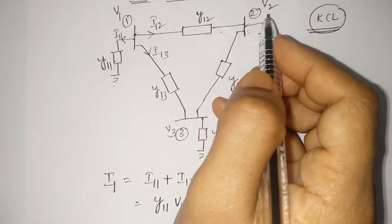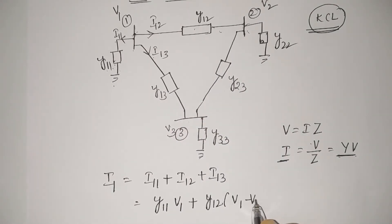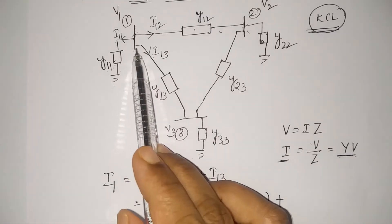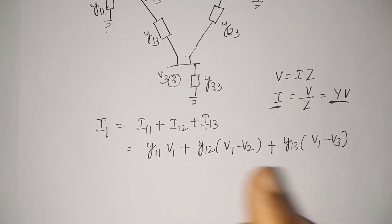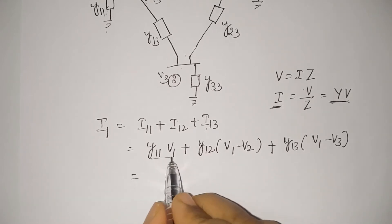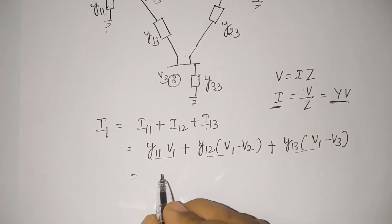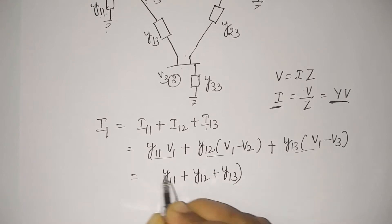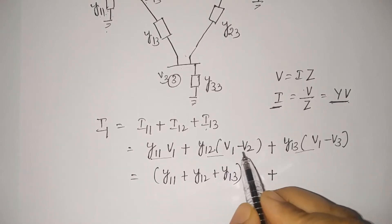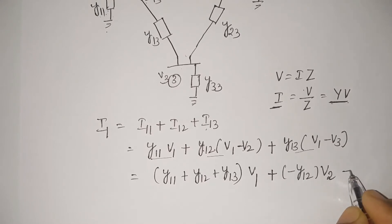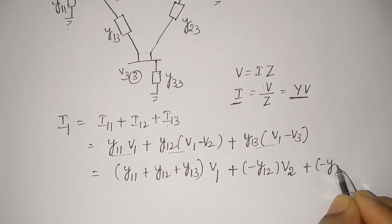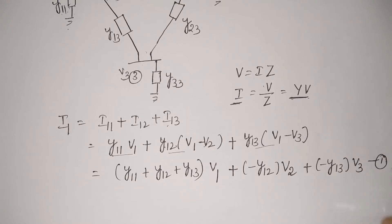Based on nodal analysis, V1 is positive and V2 is negative, giving V1 minus V2. Similarly, I13 equals Y13 times (V1 minus V3). Rearranging and grouping by V1, V2, V3 terms: I1 equals (Y11 + Y12 + Y13)·V1 minus Y12·V2 minus Y13·V3. Call this Equation 1.